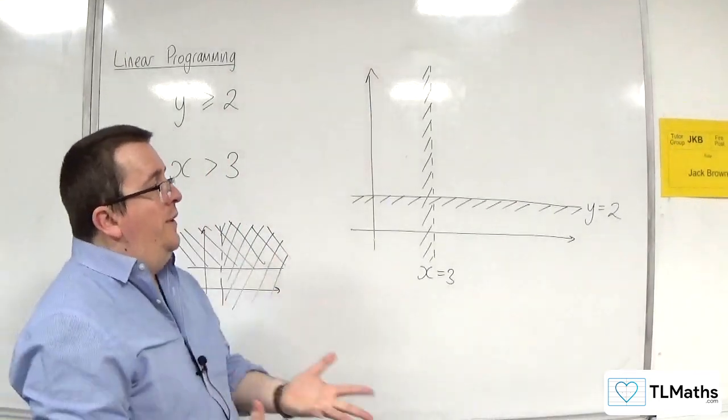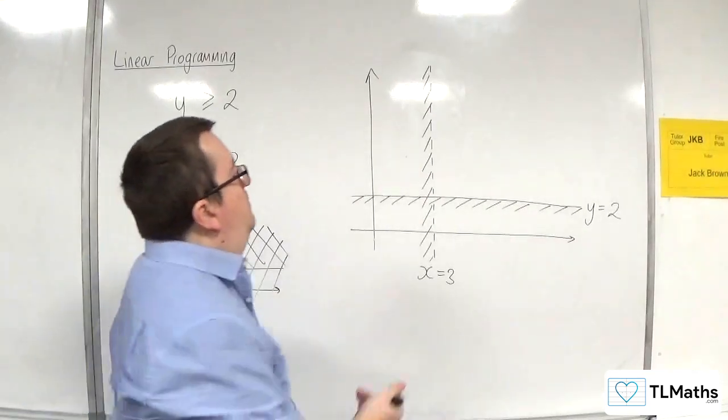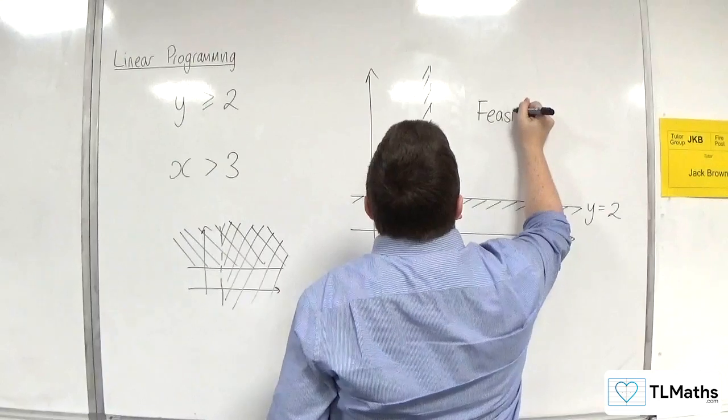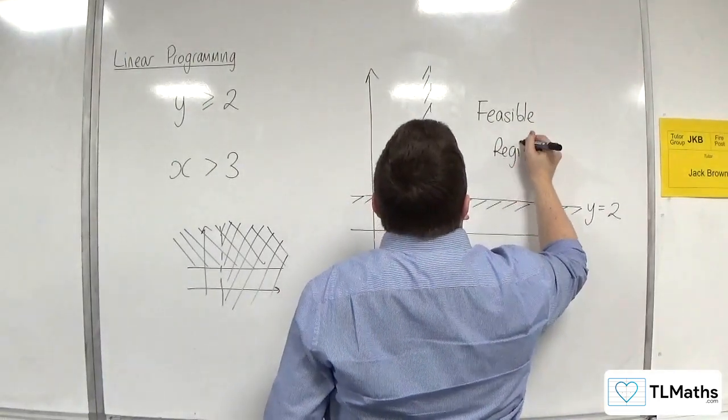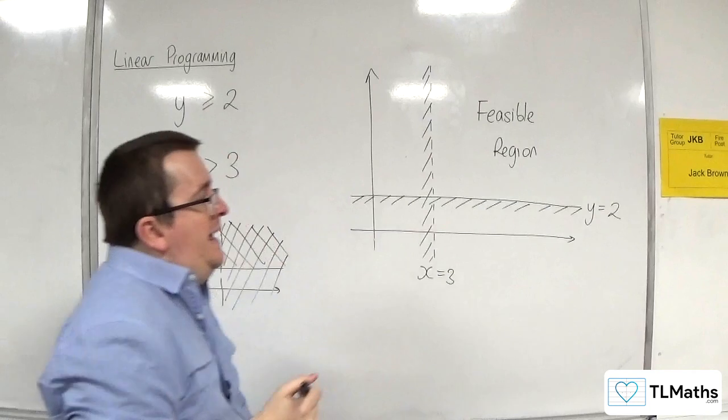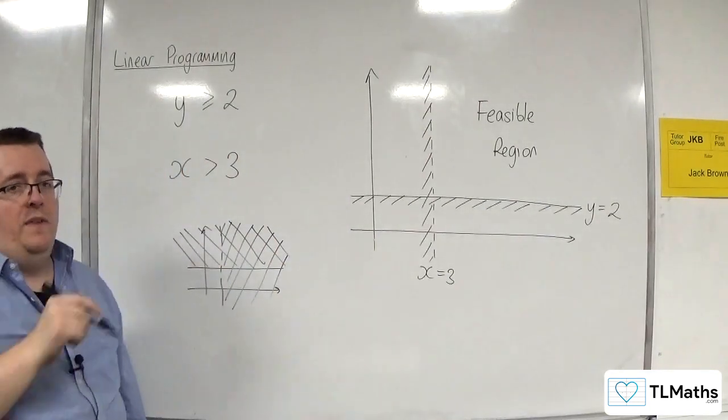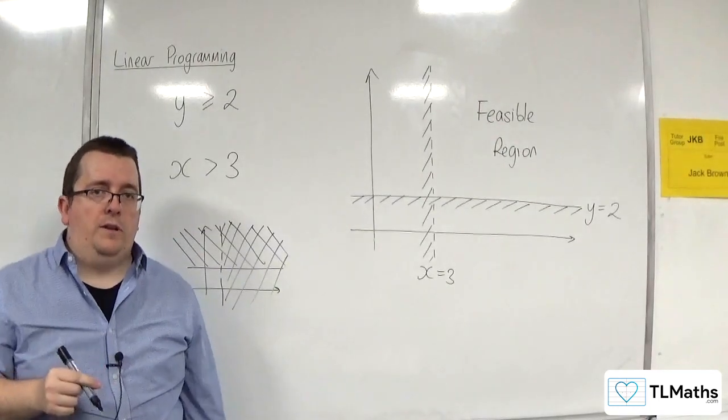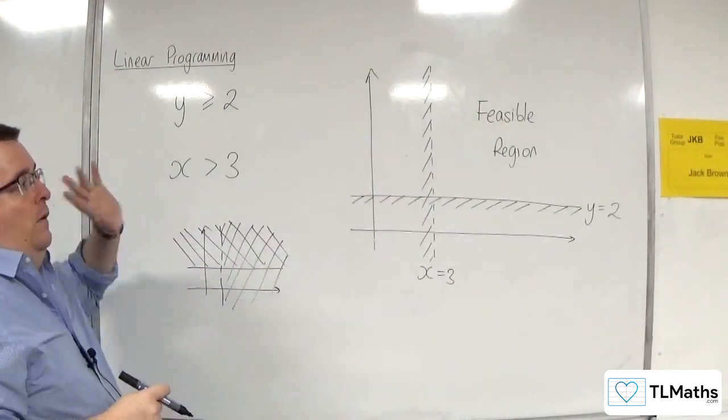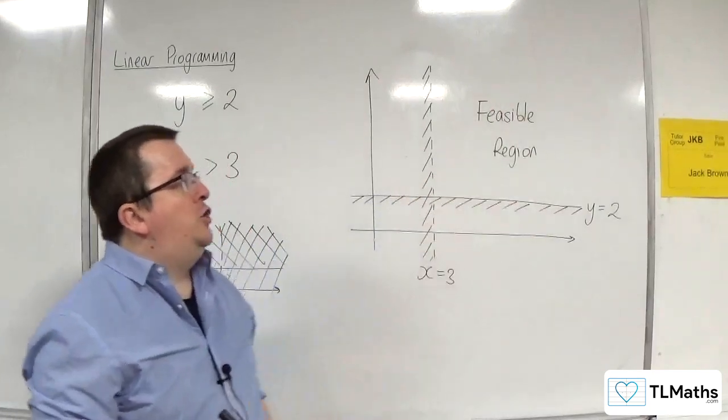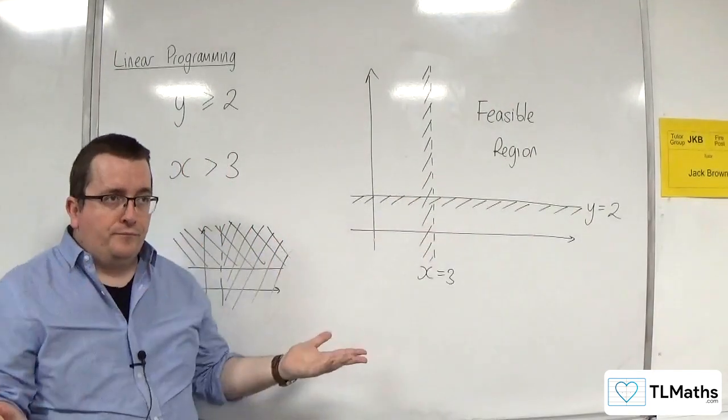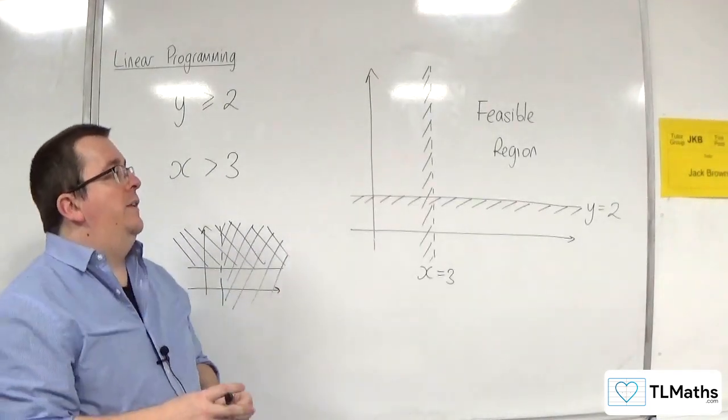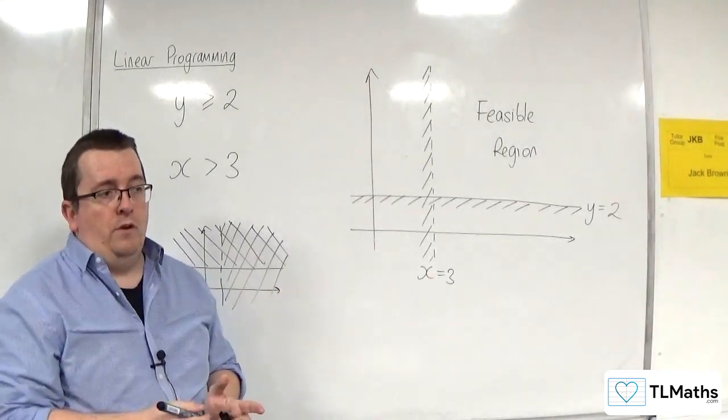The region that satisfies the inequalities that you have is referred to as the feasible region. Because any answer that is within that region is feasible, is possible. Now, different values within your feasible region might give you different possibilities of whether there is a maximum or a minimum value. That we're going to consider later on.